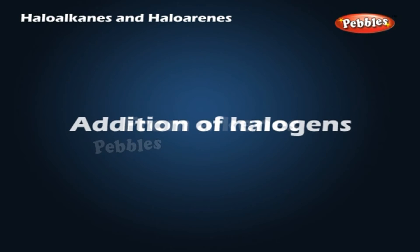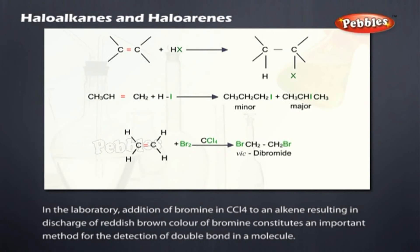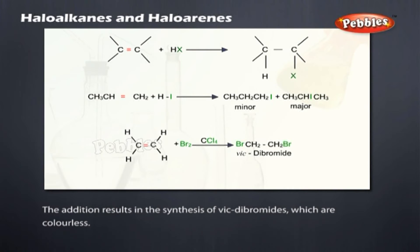From alkenes — addition of halogens: in the laboratory, addition of bromine in CCl4 to an alkene, resulting in discharge of the reddish-brown color of bromine, constitutes an important method for the detection of a double bond in a molecule. The addition results in the synthesis of vicinal dibromides, which are colorless.